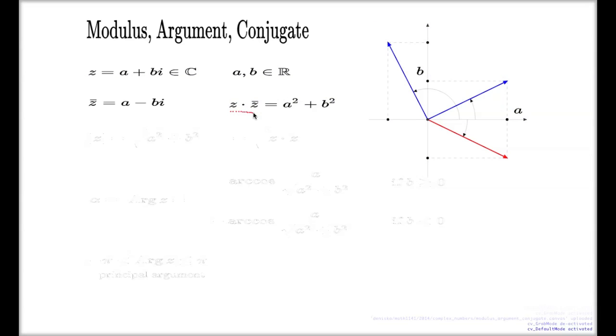In that case, this product, under these geometrical interpretations, returns the square of the length of the vector representing your complex number.